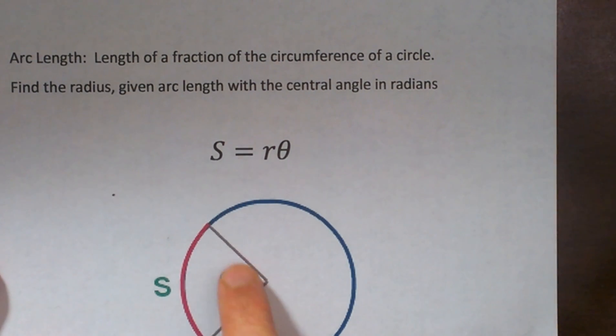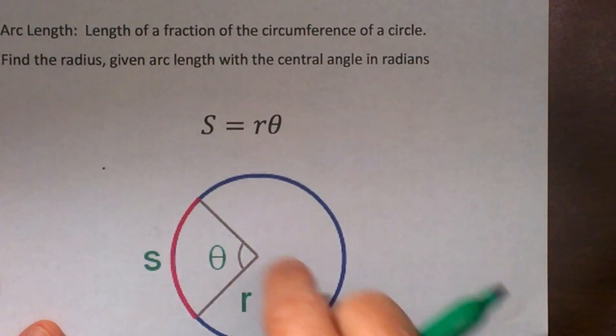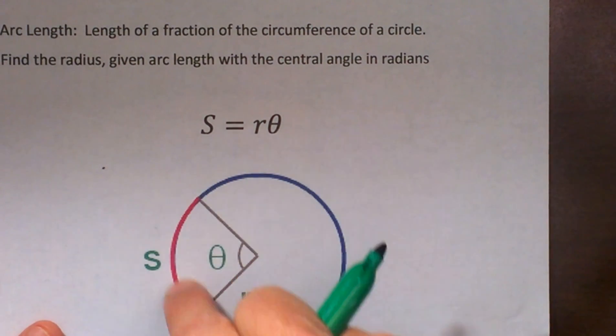What is arc length? Well, arc length is the length of a fraction of the circumference of a circle. So let's say you don't want to know the whole circumference. You only want to know a part of it.